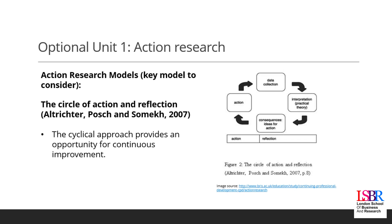During this optional unit, we are also going to look at some key models, so there is an element of theory included as well. One of the most popular models when it comes to action research is the Circle of Action and Reflection by Altrichter, Posch and Sommeth. This cyclical approach gives you an opportunity to take action, explore an area of your own practice, then collect data, interpret and evaluate it, draw conclusions, and think about how you could improve.